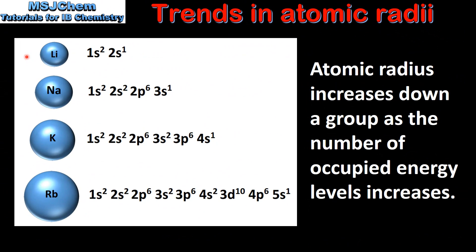Next we'll look at the trend in atomic radius going down a group. Here we can see the first four elements in group 1 and their electron configurations. Lithium has 2 occupied energy levels, sodium has 3, potassium has 4, and rubidium has 5. Therefore the atomic radius increases down a group as the number of occupied energy levels increases and the outer electrons are further from the attraction of the nucleus.